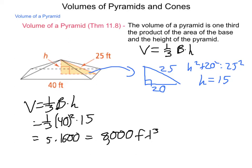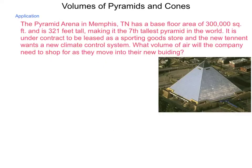So we can use the basic formula to solve for that volume. Let's see how this would look in a little bit of application. The Pyramid Arena in Memphis, Tennessee has a base floor area of approximately 300,000 square feet, and is 321 feet tall, making this the seventh largest pyramid in the world.